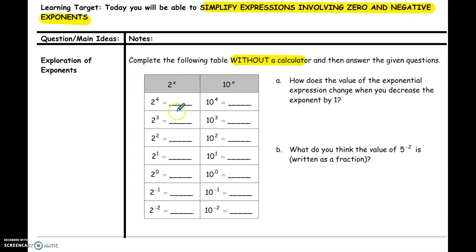If you look at the table, there are two columns. One column is powers of two, and one column is powers of ten. I'm going to start in the middle with two to the first power and ten to the first power. The bottom half has zero and negative exponents, which we will look at and define in a second.